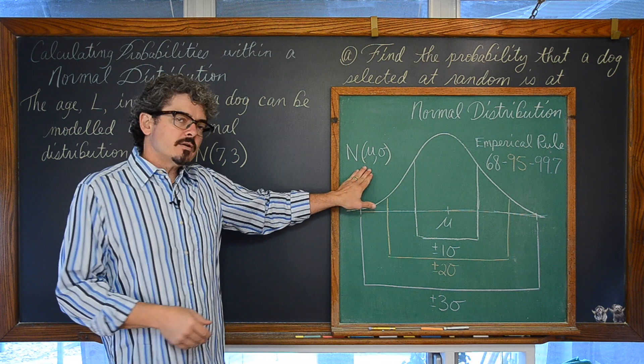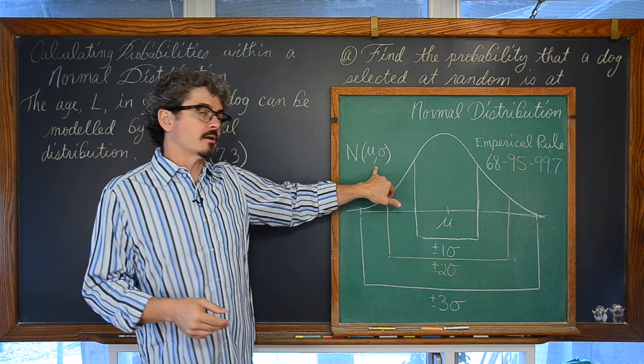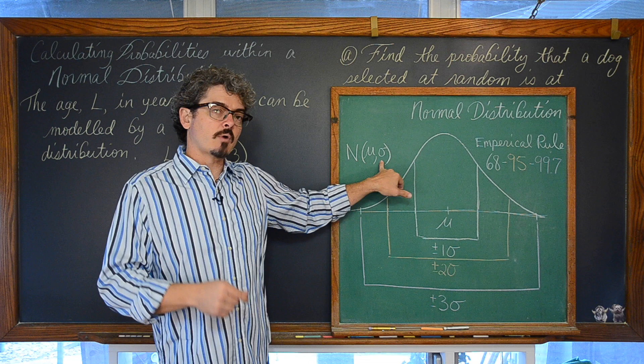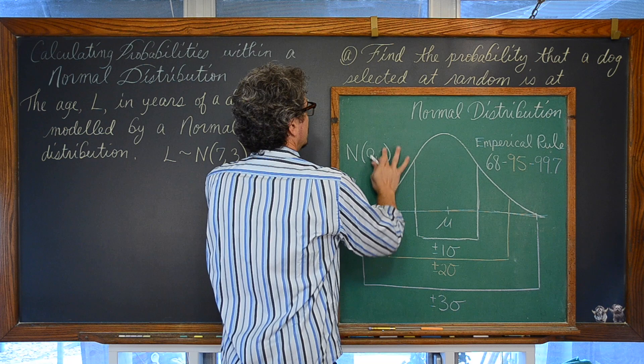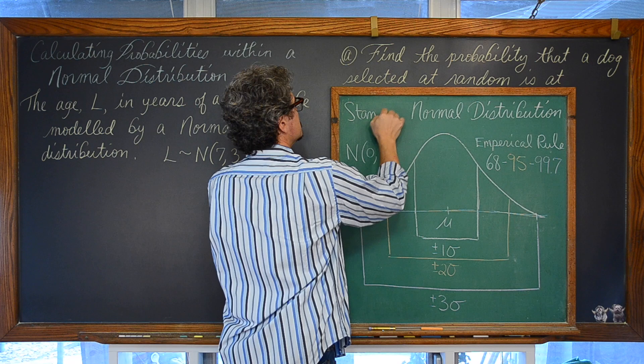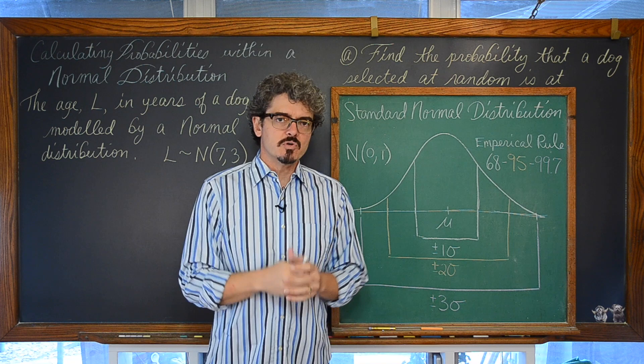Shorthand notation for a normal distribution is a capital N with parentheses. The first number represents the mean and the second number represents the standard deviation. If you set the mean to zero and the standard deviation to one, this represents what is called a standard normal distribution — basically your distribution of z-scores.